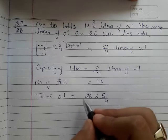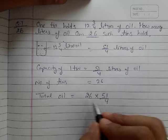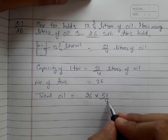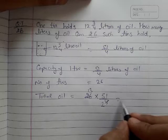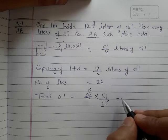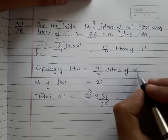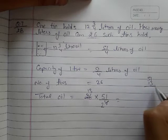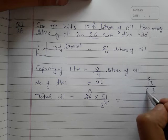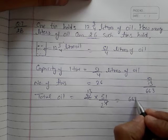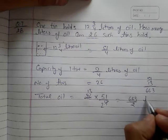So now we can solve this. It is 26, it is 4. We can cut 26 and 4 by 2. So 2s are 4 and it is 13. Now we will multiply numerator with numerator. So it will become 51 multiplied by 13 equals, 1s are 13, 1 carry 13, 5s are 65 and 1, 66, 663 over 2 liters of oil.